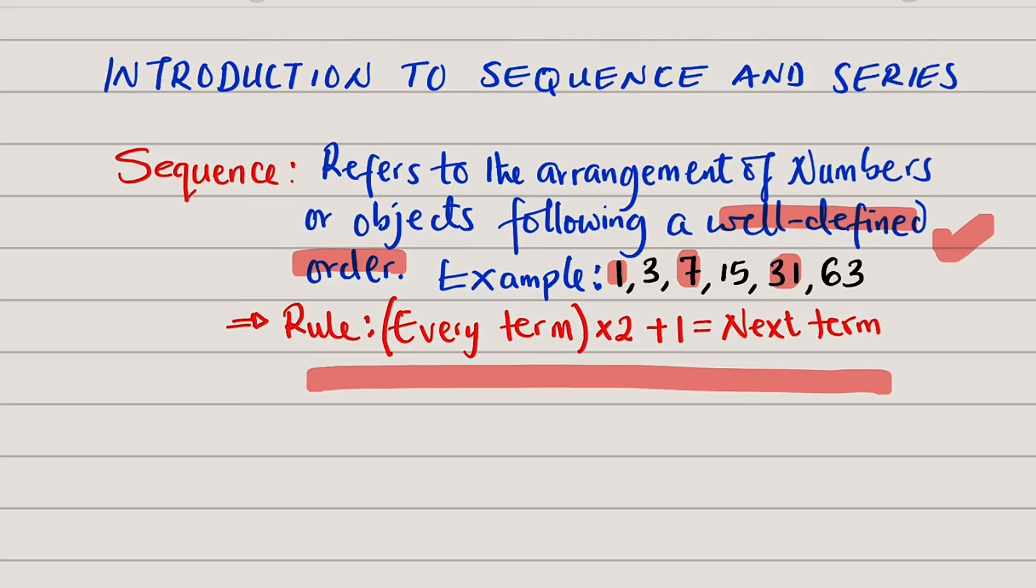So, there are a few things you need to know about sequence. All members are separated by comma, and the first term there is donated by A. Last term, if available, is donated by L. And every member can be donated by TN.